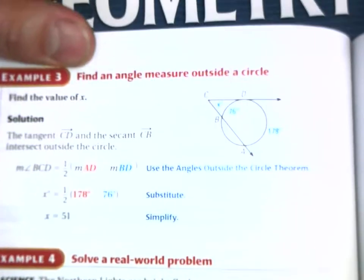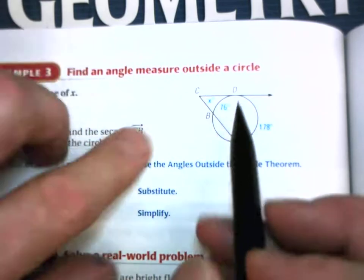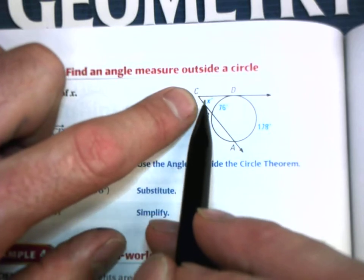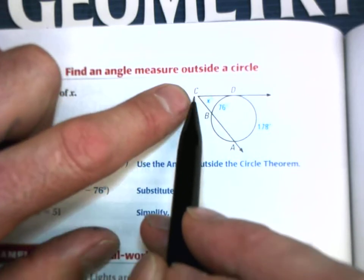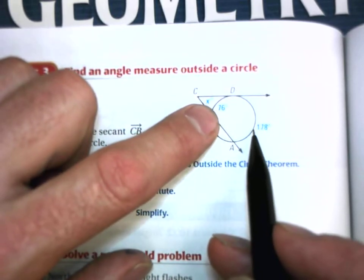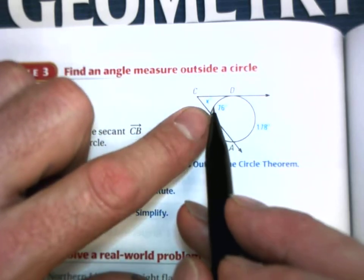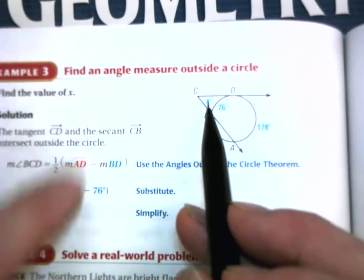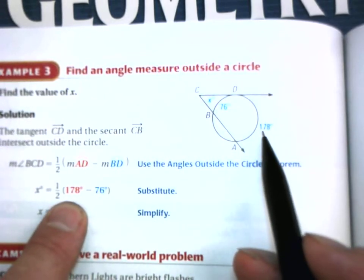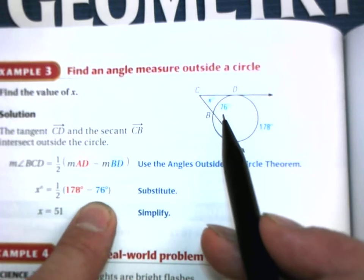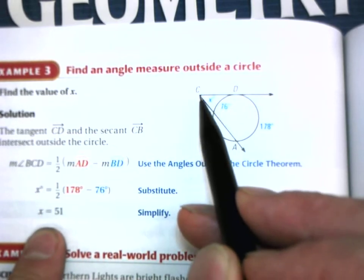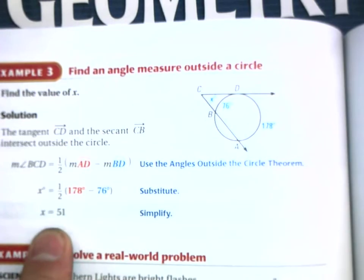Now we have a circle with an angle whose vertex is outside of the circle. The measure of this angle is one half the difference — not the sum — of the two intercepted arcs. So X equals one half times 178 minus 76. That gives us 51 degrees.